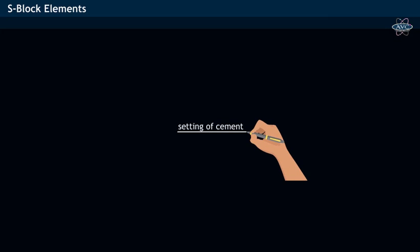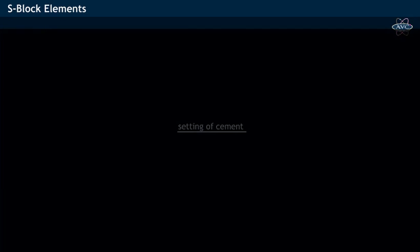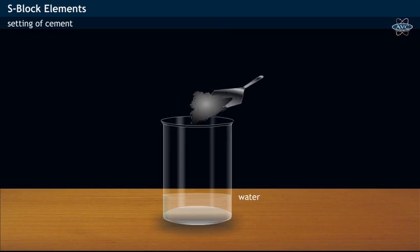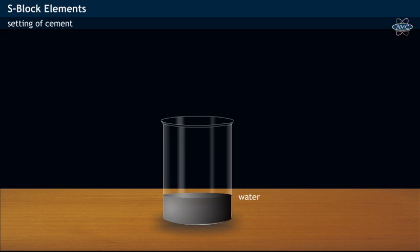What is setting of cement? When cement is added to water, it dissolves in it and then sets into a hard mass. This process of hardening of cement is called setting of cement.